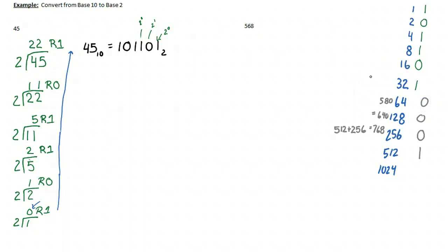So then 512 plus 32. 544. Ah, so 512 plus 32 is equal to 544. That's lower than 568, so let's flick that on.